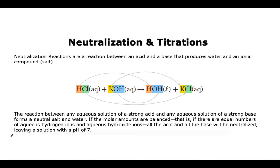This reaction between an aqueous solution of a strong acid and any aqueous solution of a strong base forms a neutral salt and water. So if the molar amounts are balanced — meaning there are equal numbers of aqueous hydrogen ions and aqueous hydroxide ions, the hydrogen ions coming from the acid and the hydroxide ions coming from the base — all the acid and all the base will be neutralized. And when that happens, you end up with a pH of 7. In our course we're only going to look at strong acids and strong bases reacting together.